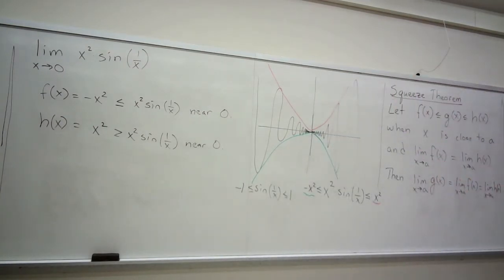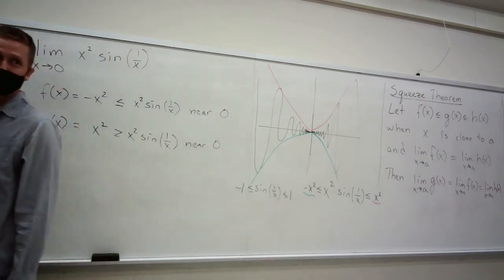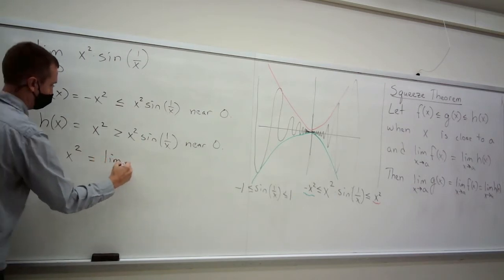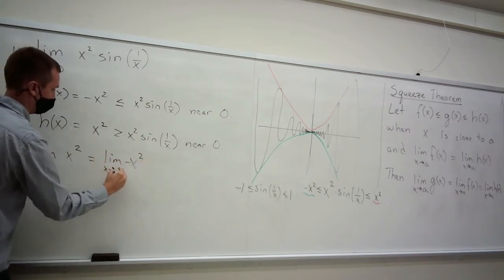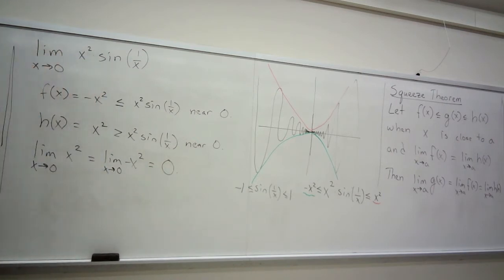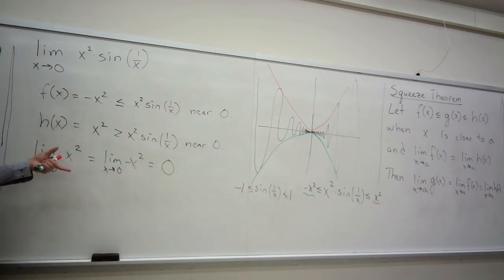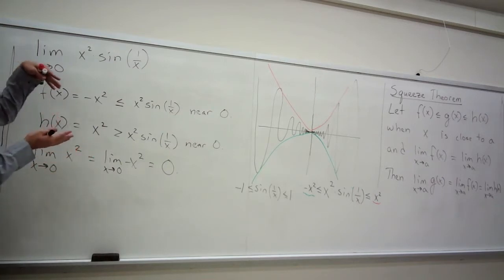What are the limits of negative x squared and x squared when x goes to 0? x squared is a polynomial, so we plug in 0. Both of them have the same limit. So we've got something bigger that has a limit of 0, and something smaller that has a limit of 0. So the thing that's in between the two must have the same limit, because it's constantly being squeezed between them.